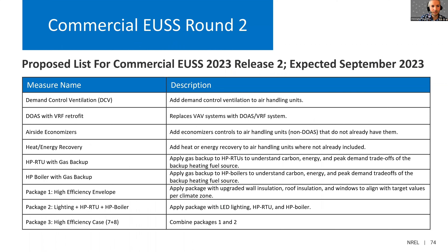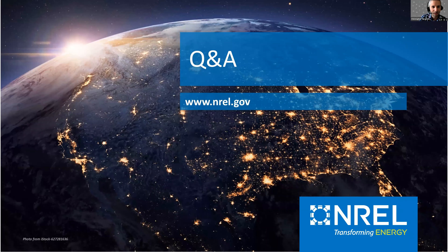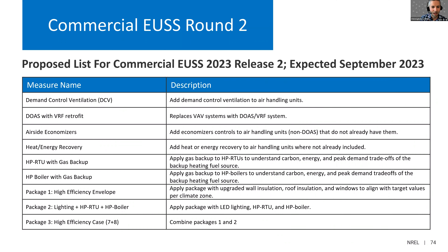For next steps, this is our list of proposed measures for the Commercial EUSS 2023 Release 2. We're expecting to release this in September of 2023. We have a few packages here, including a few more HVAC scenarios. Andrew Parker is going to lead the Q&A, so I'll hand it over to him now.